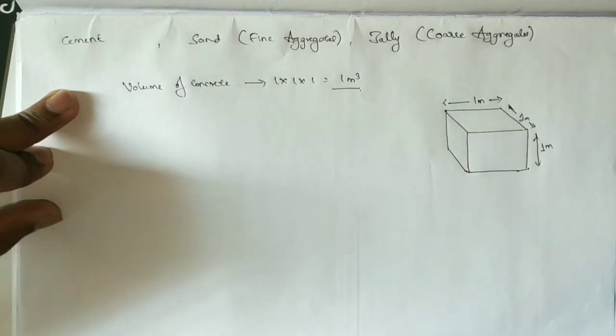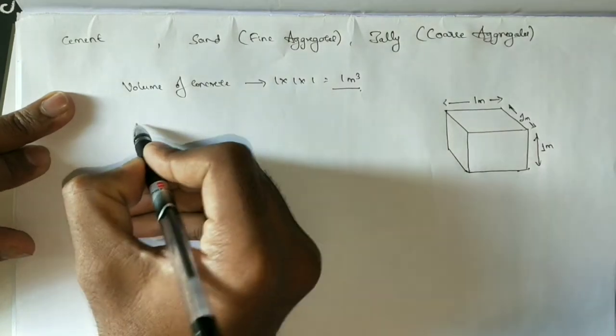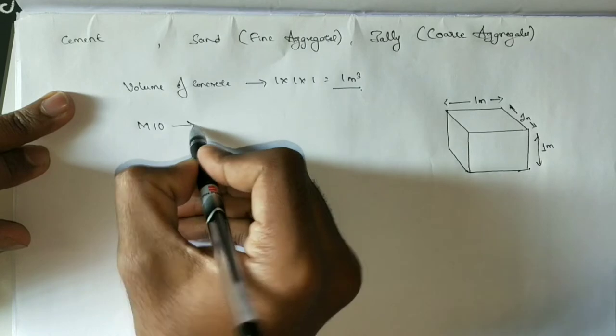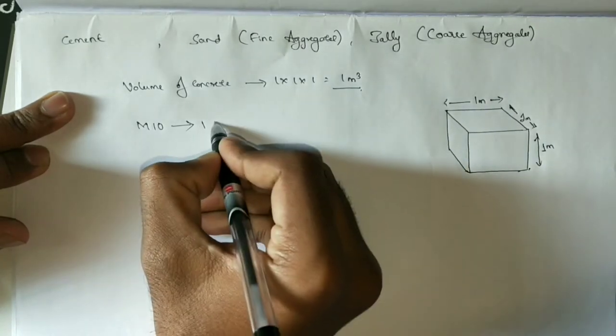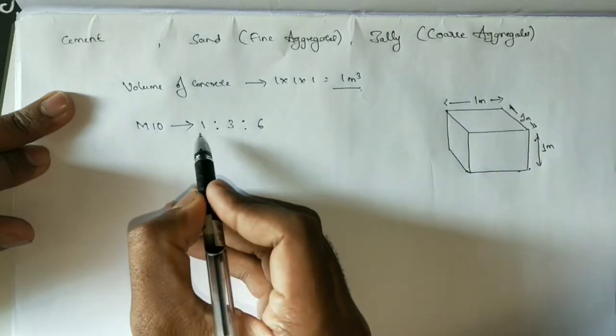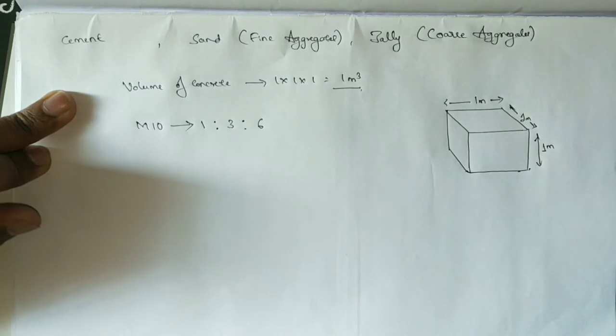For example, if this is M10 grade of concrete, the ratio is 1:3:6, which means one part of cement, three parts of sand, and six parts of jelly. Similarly, M15 grade is 1:2:4.